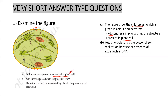The second question is: can they be passed on to the progeny? Yes, they can be passed on because the chloroplast can replicate. Chloroplast and mitochondria are both semi-autonomous organelles, so they can replicate their own DNA.